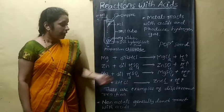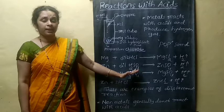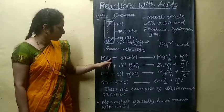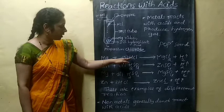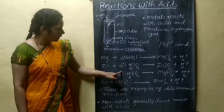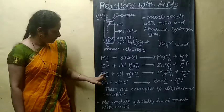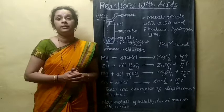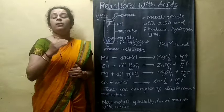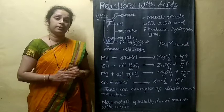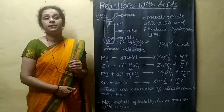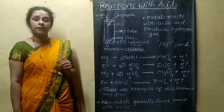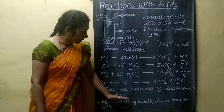I will explain displacement reactions. In these reactions, HCl is present and Mg displaces hydrogen to form magnesium chloride, while hydrogen comes out. Similarly, zinc displaces hydrogen to form zinc sulfate, and magnesium displaces hydrogen to form magnesium sulfate. Here, one metal replaces another element. More reactive metal displaces less reactive metal from the solution or compound — that is chemical displacement reaction.